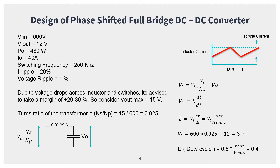The voltage across the inductor equals V_in × (Ns/Np) minus V_out. This is also equal to L × di/dt. To calculate the inductance: L = V_L × dt / di = V_L × d×Ts / I_ripple. The ripple current can be seen in the small graph at the top right, and d×Ts is the time for which the duty cycle is on, while Ts is the complete switching period.